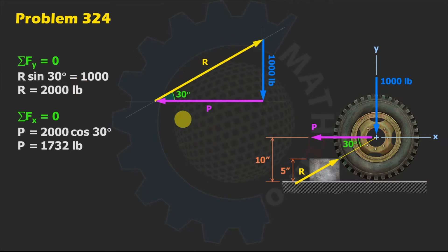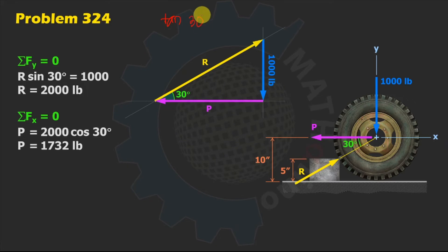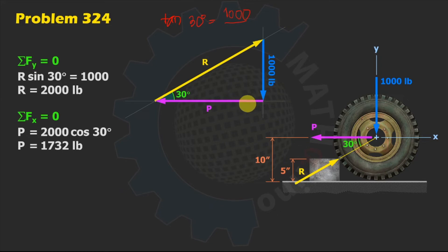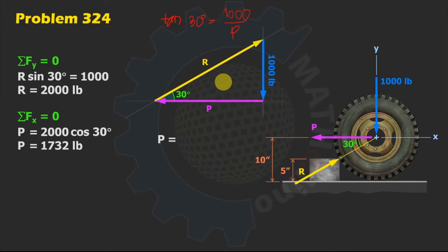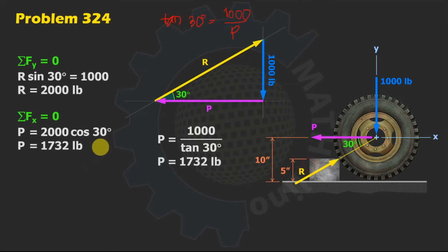From the force polygon figure, tangent of 30 degrees equals opposite (1,000) over adjacent (P). Therefore P equals 1,000 divided by tangent of 30 degrees, giving P = 1,732 pounds — the same value as before.